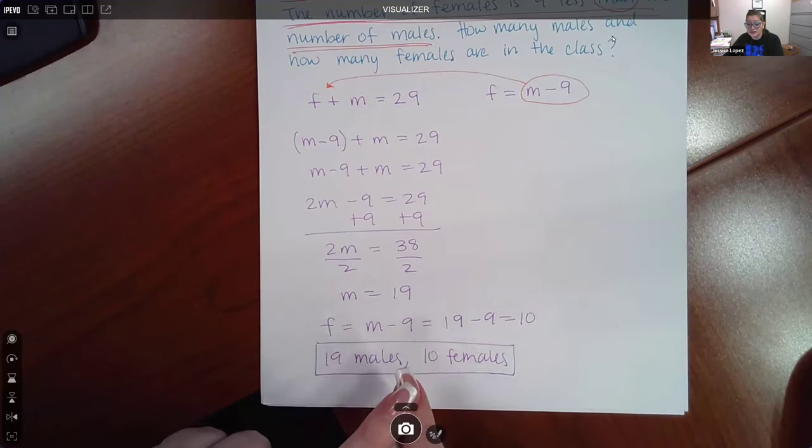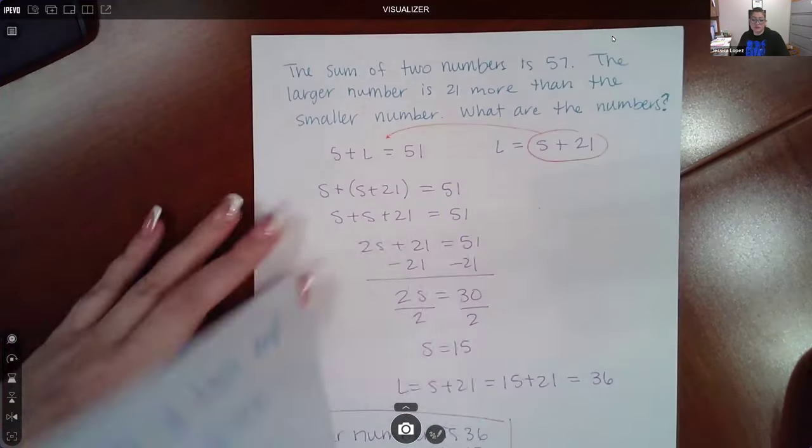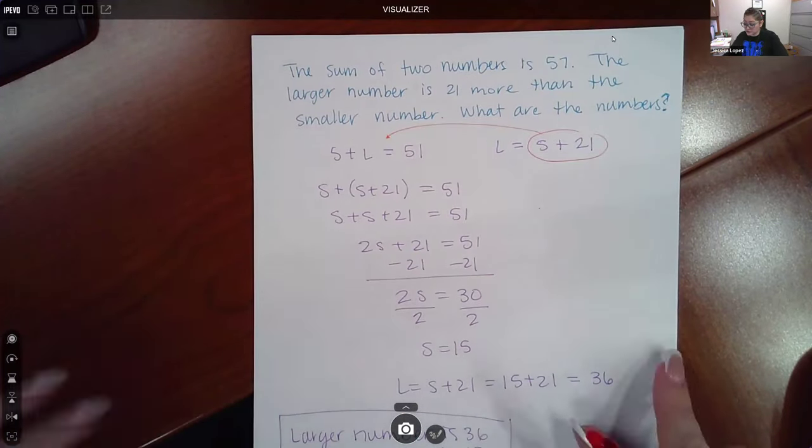Just to double check, that does come out to be the total 29 students. And I do have some other examples because I noticed that there were different scenarios. So I have two more.